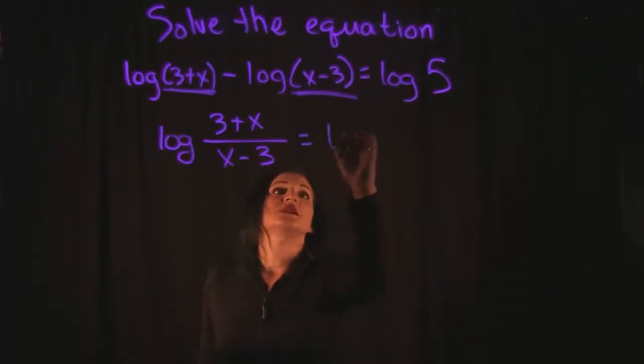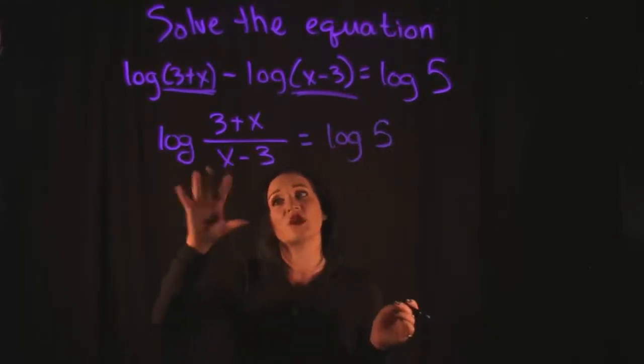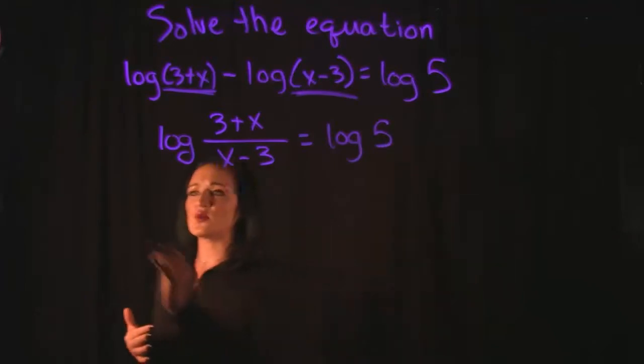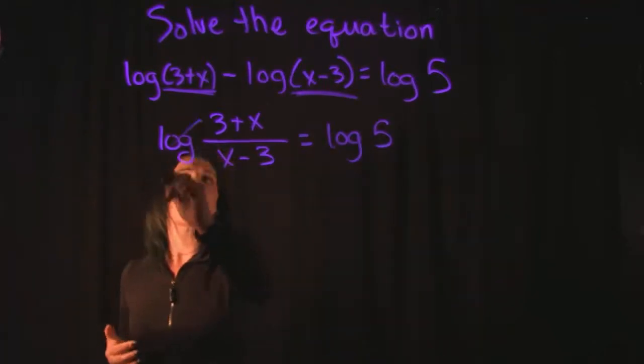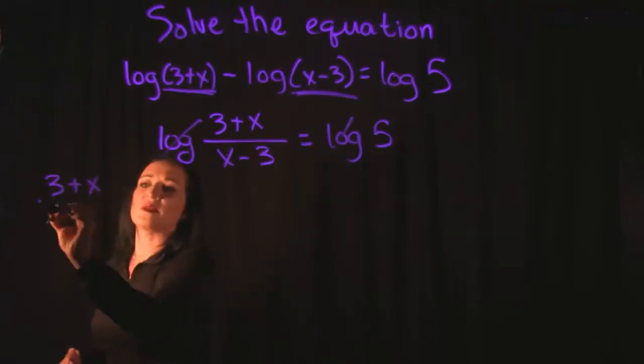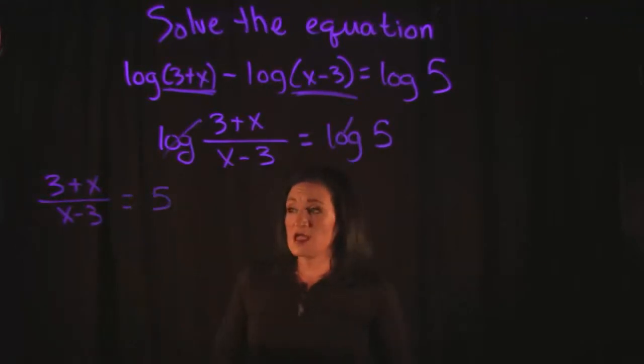And this is just going to be equal to the log of 5. So now since I have a log base 10 on the left, log base 10 on the right hand side, and this equation is pretty much saying that they are equal to each other, what I'm going to be able to do then is I can drop the logs from the problem.